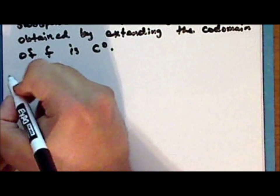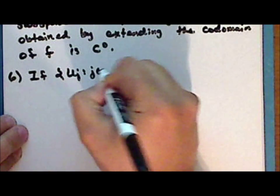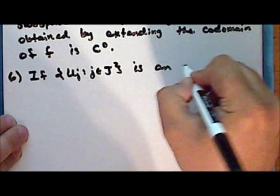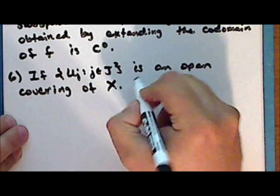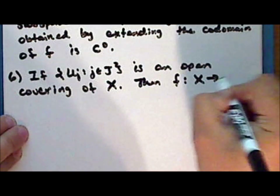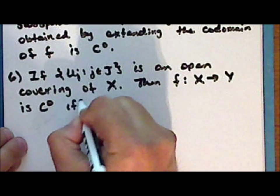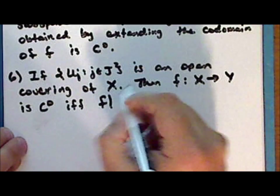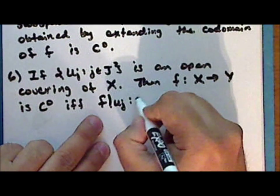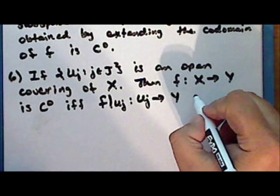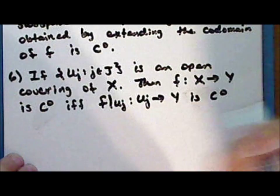If the collection of sets U-sub-j, for j in some indexing set J, is an open covering of the space X, then the function F mapping X into Y is continuous if and only if the restriction of the function F to the subset U-sub-j, mapping U-sub-j into the space Y, is continuous for every index j.